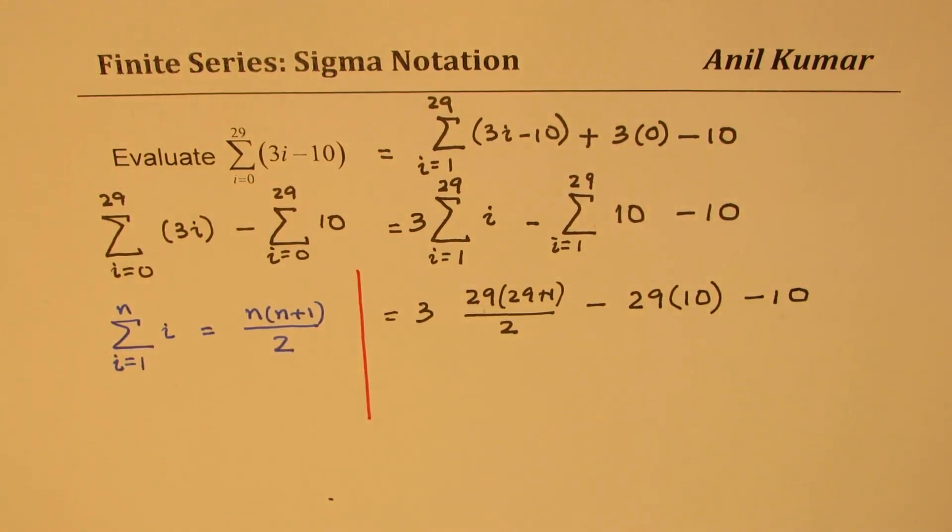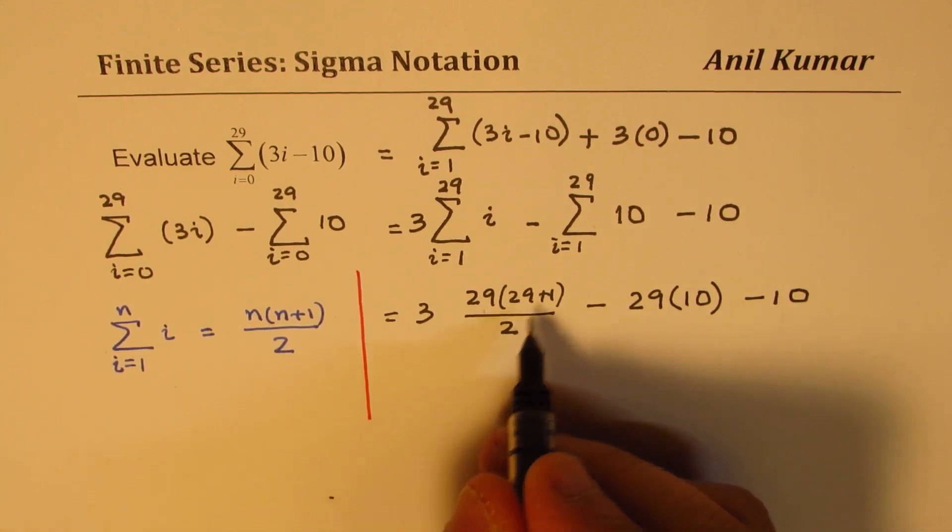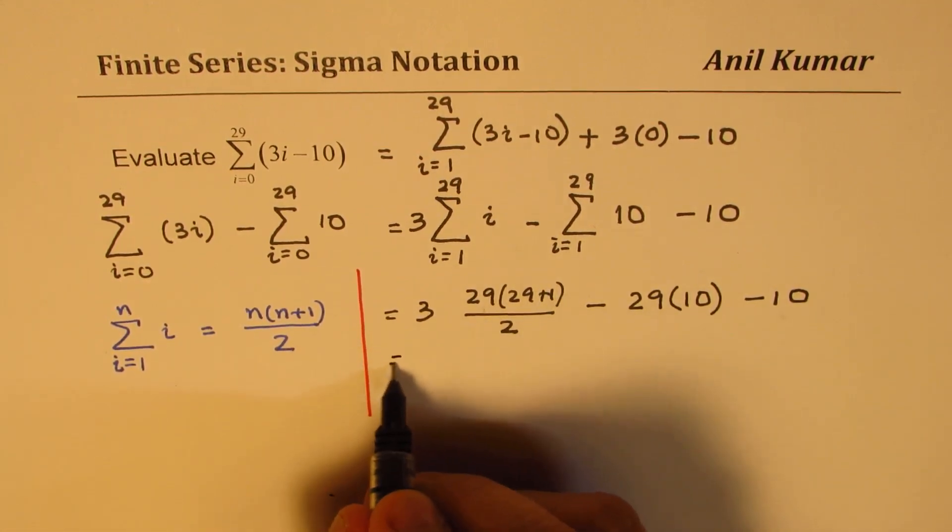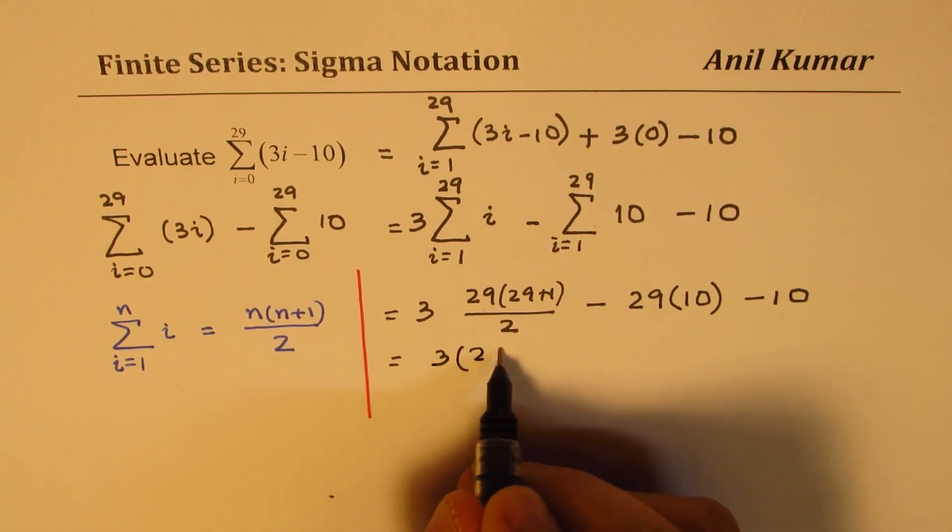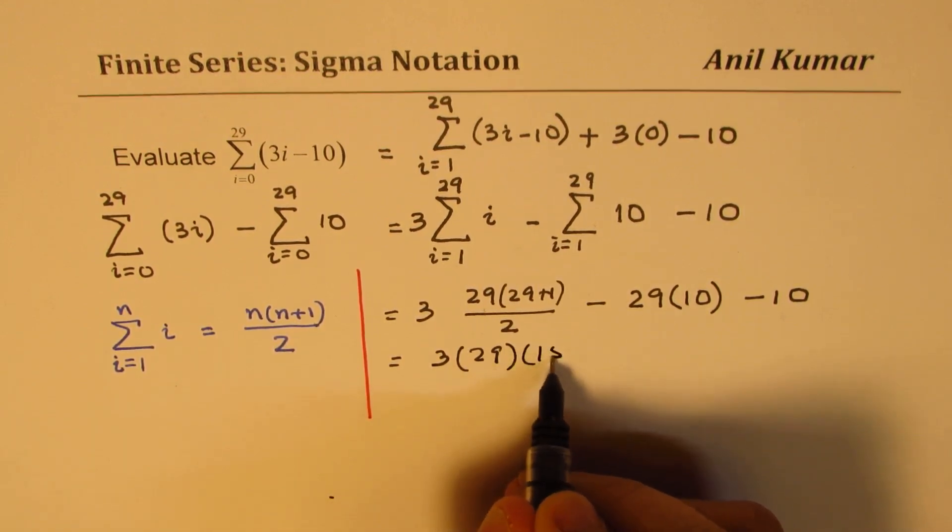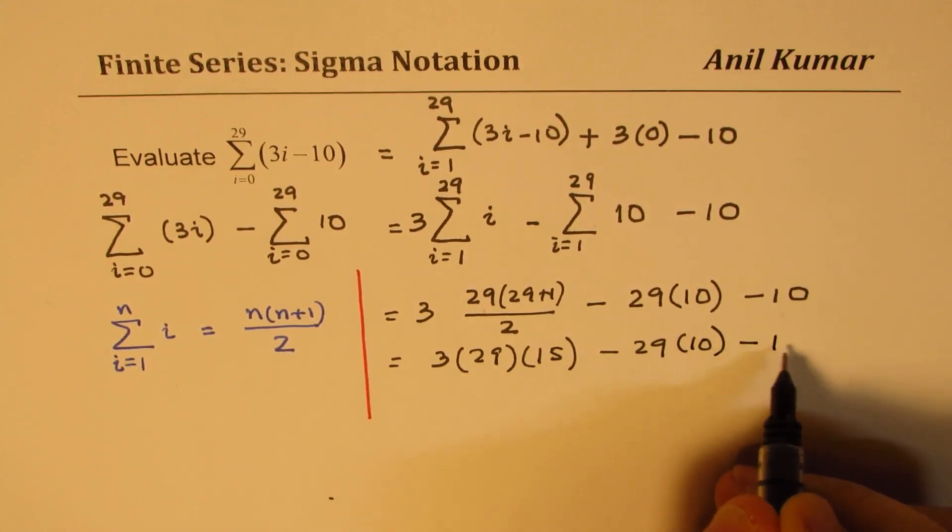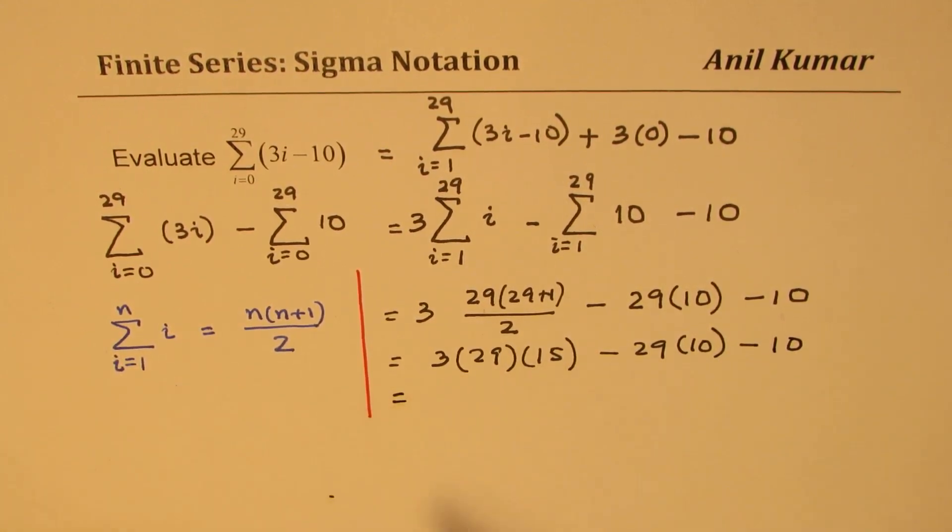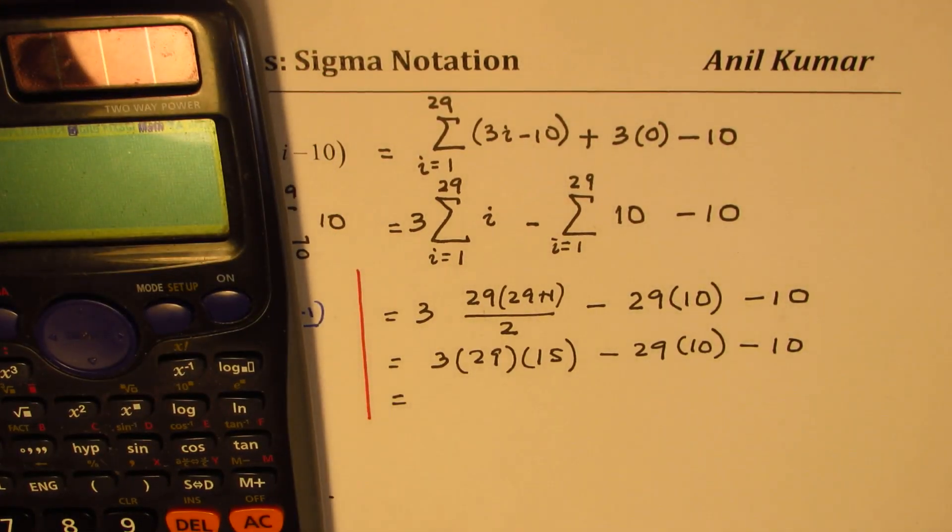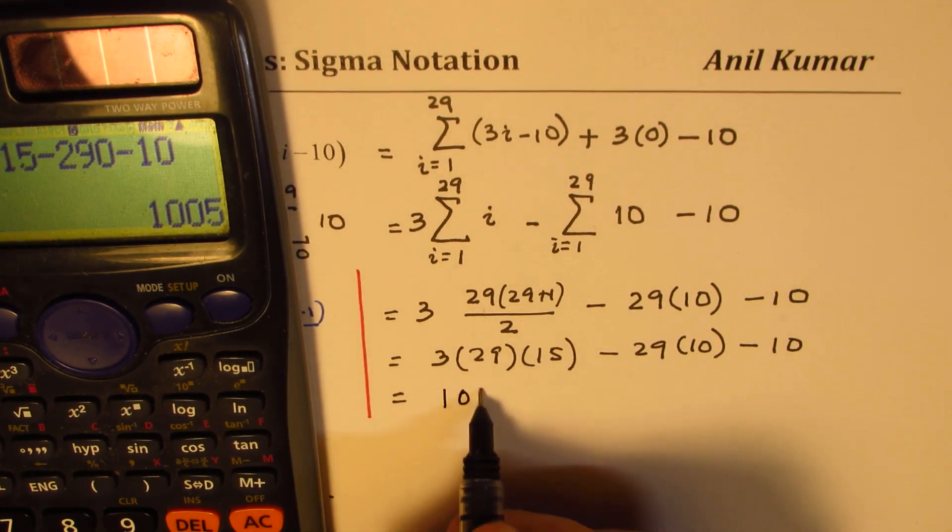So that is how we kind of get our answer. So this is 30, so we can divide this, and we can calculate. So we get 3 times 29, times 15, minus 29 times 10, minus 10. Is it clear? Now you can use your calculator and evaluate the answer. So that gives you your answer as 1,005.